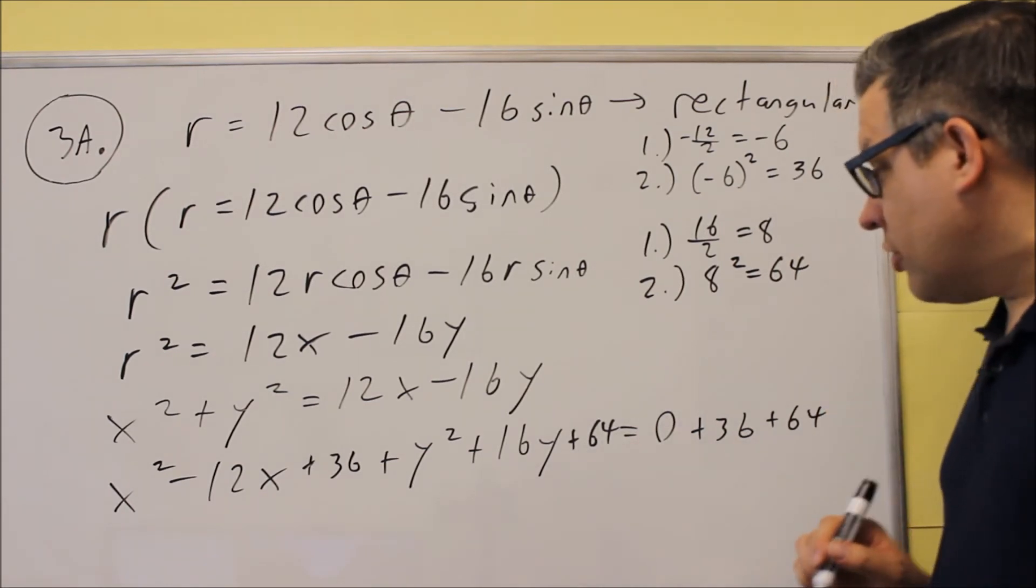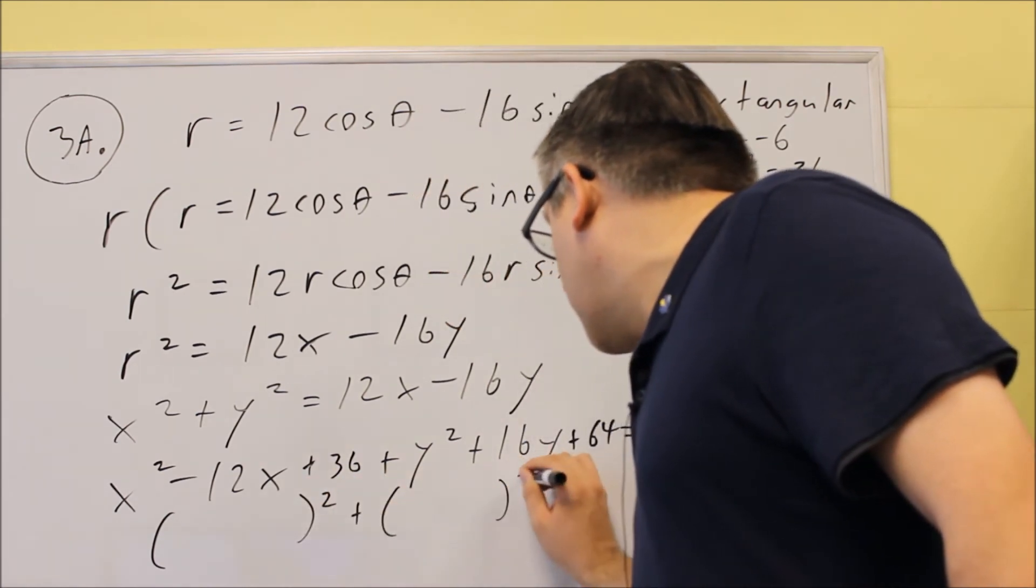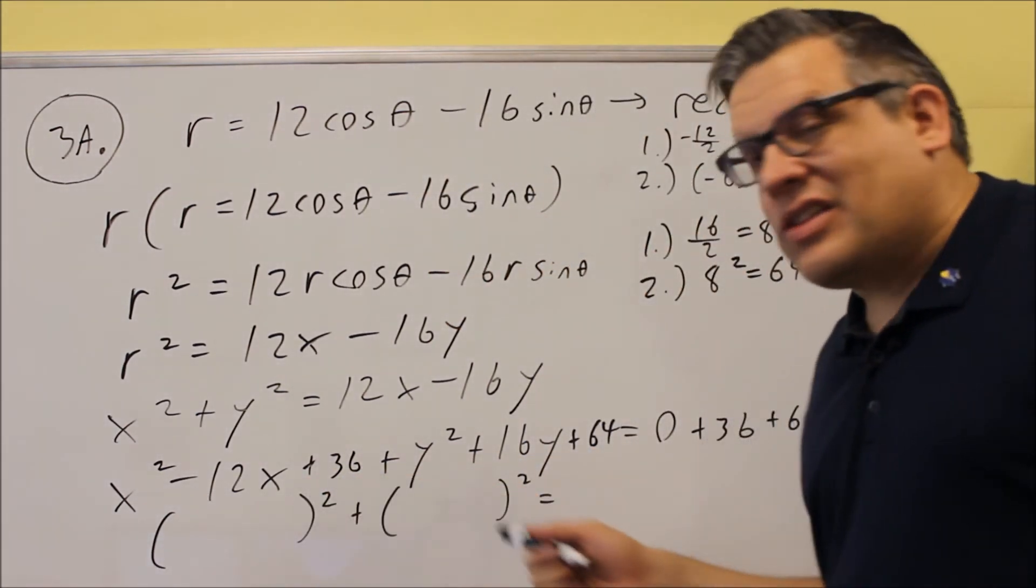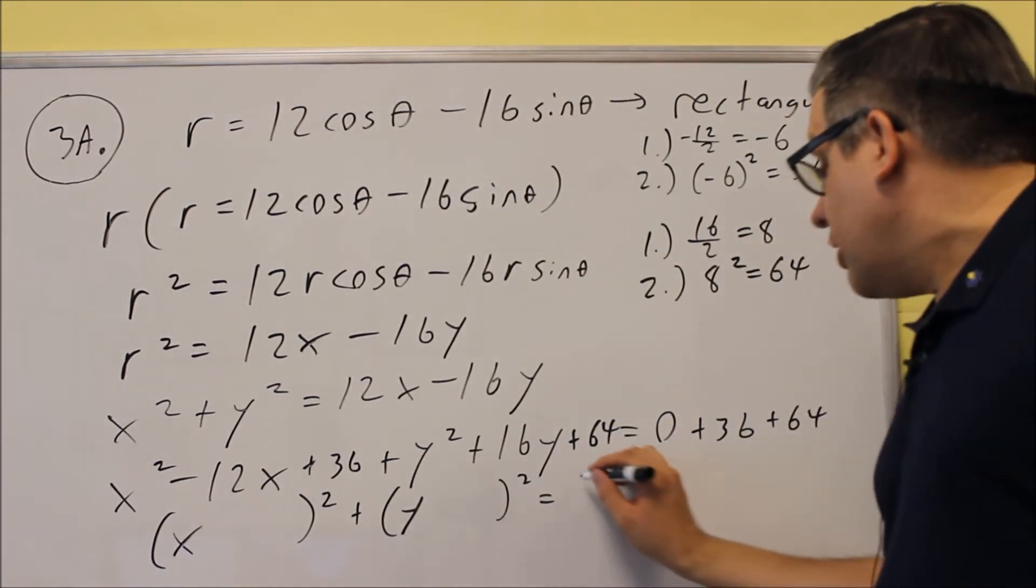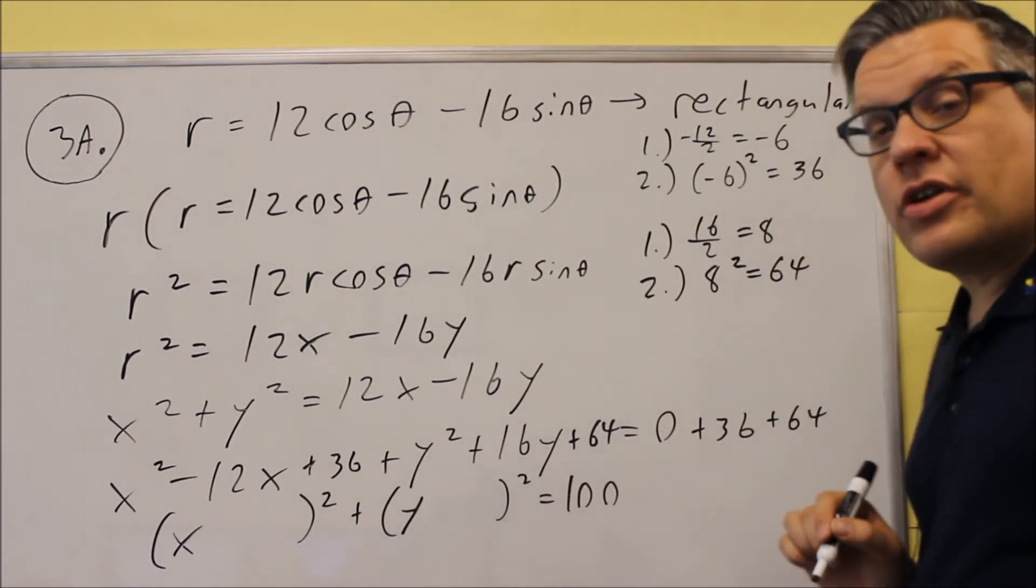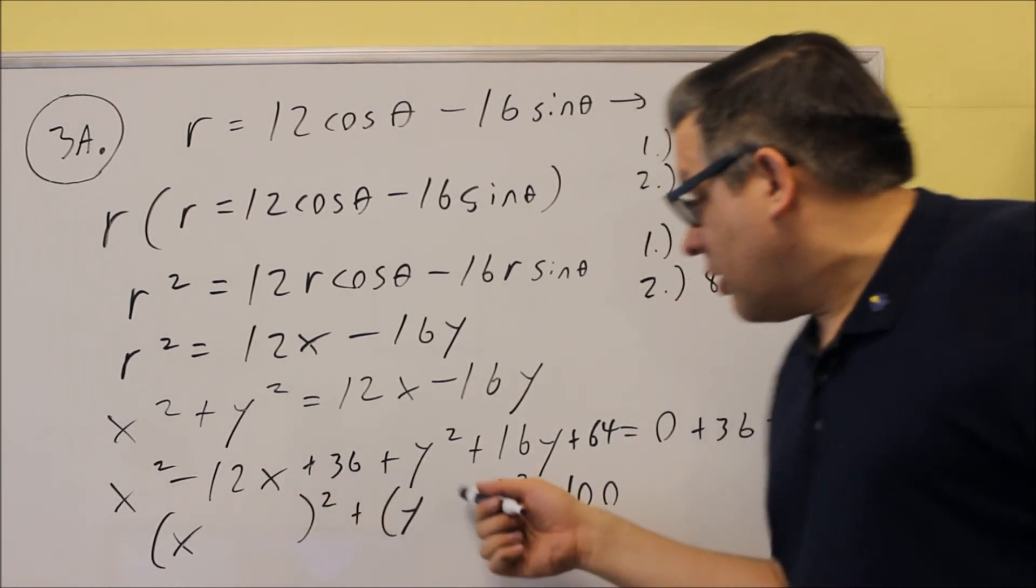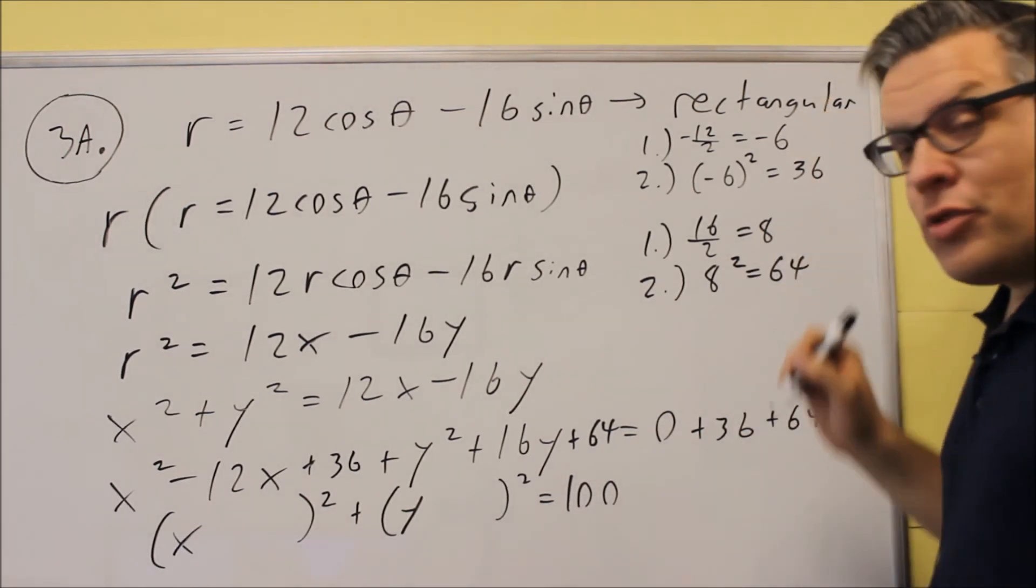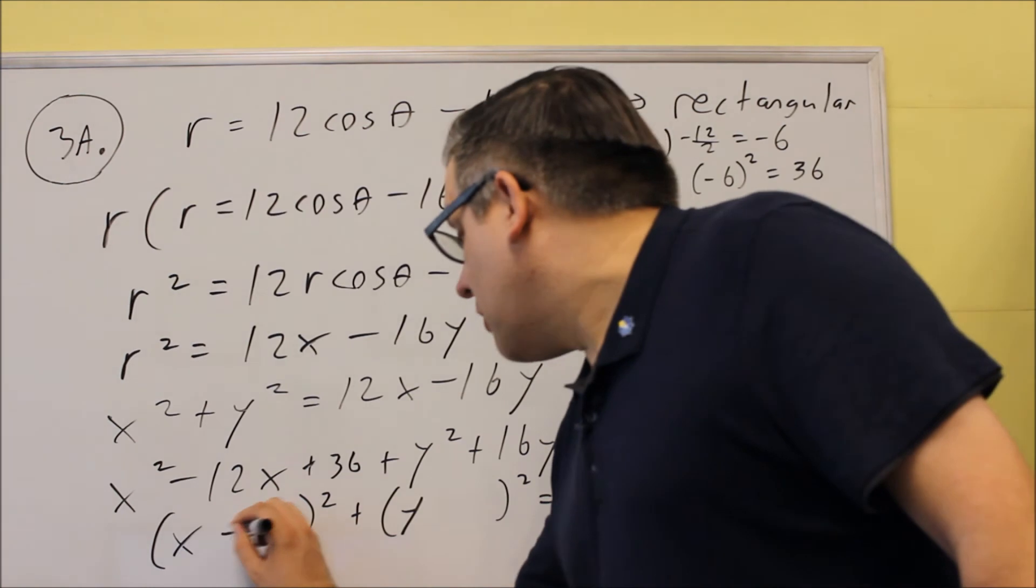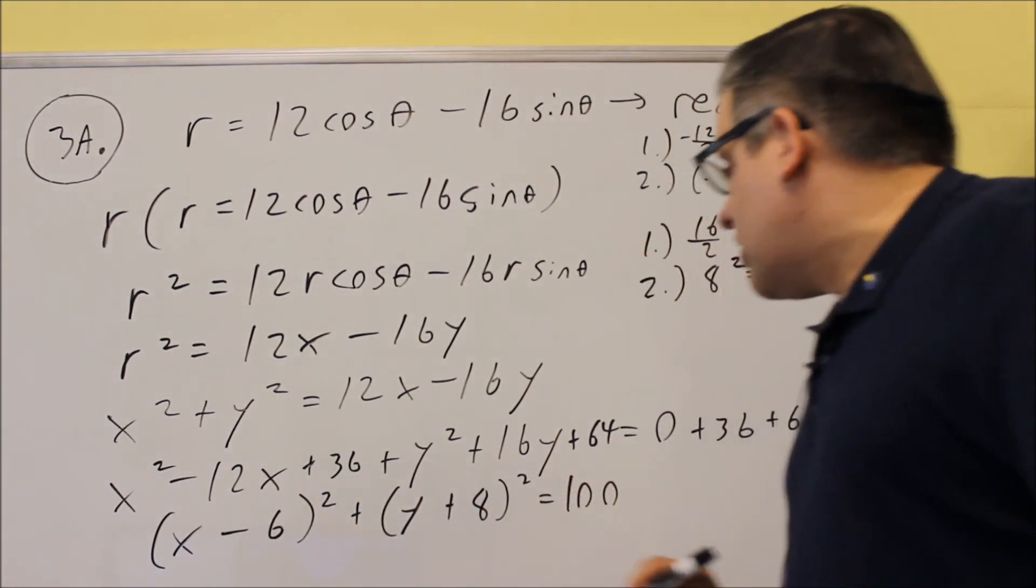Now the last thing that we're going to do is we're just going to factor this. And when you factor it, it's going to go into a form that looks like that. You'll have an x quantity squared and a y quantity squared there, and you'll have 100 on this side when you add 36 and 64. Now what goes inside the blank here is the answer you get for step 1 of your complete the square steps. So inside here, we'll have a minus 6. Inside there, you'll have a plus 8.